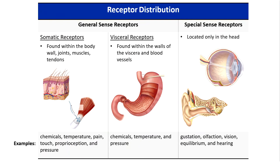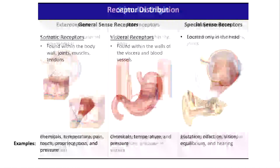The special sense receptors are only located in the head. These are responsible for gustation or taste, olfaction or smell, vision, equilibrium, and hearing. All of those receptors are housed in complex organs found in the head.